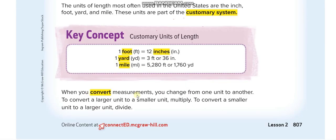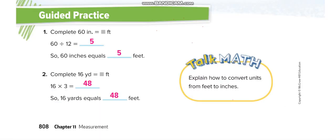The textbook confirms: when converting measurements, you change from one unit to another. To convert a larger unit to a smaller unit, multiply. To convert a smaller unit to a larger unit, divide. Now let's move to the next example.